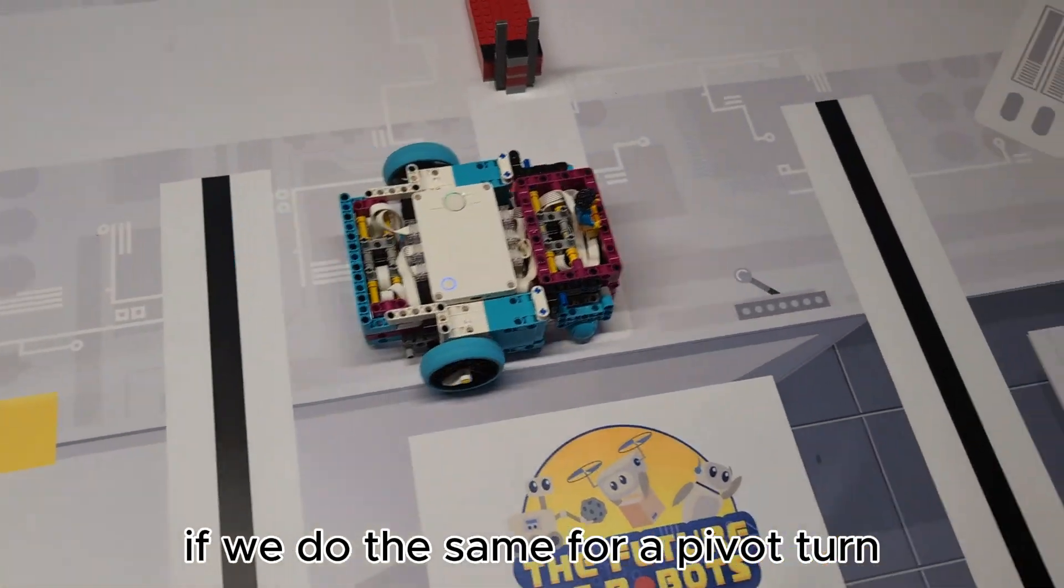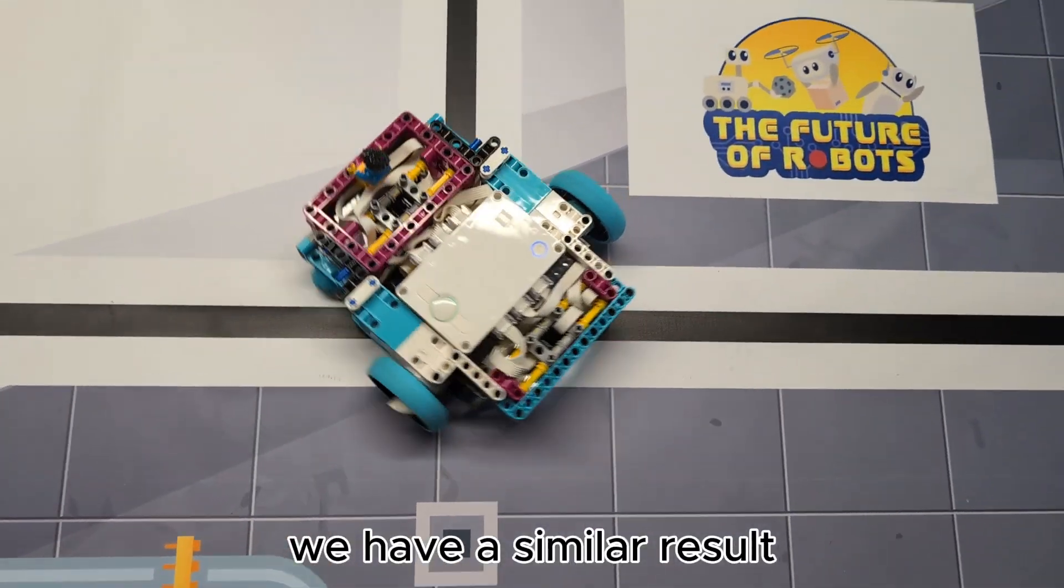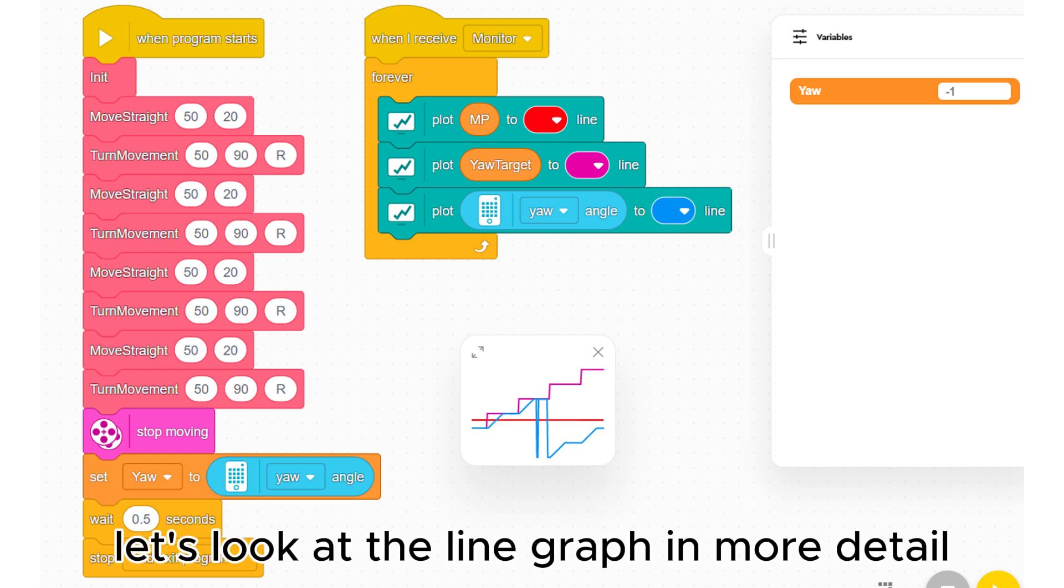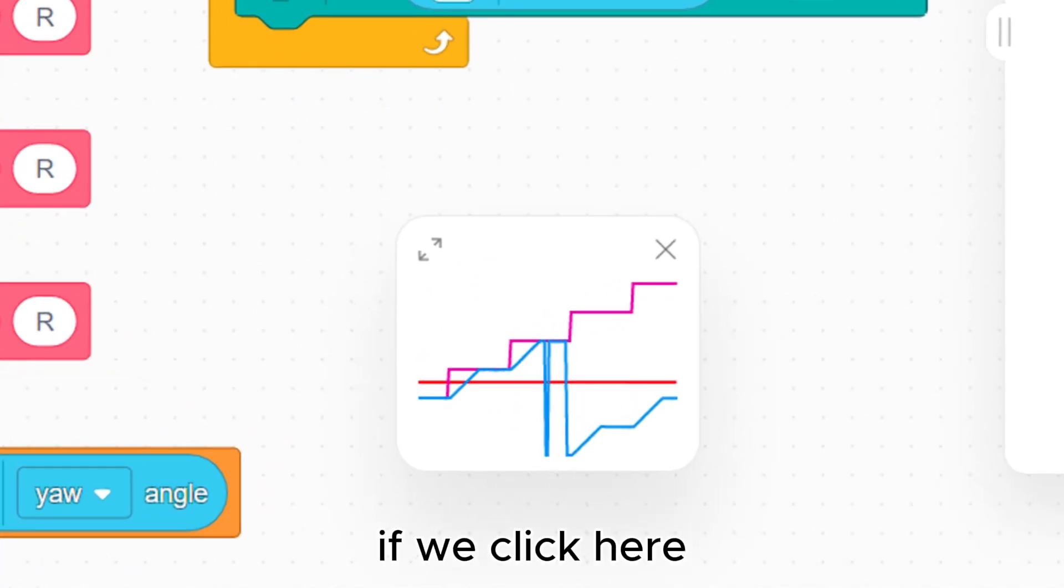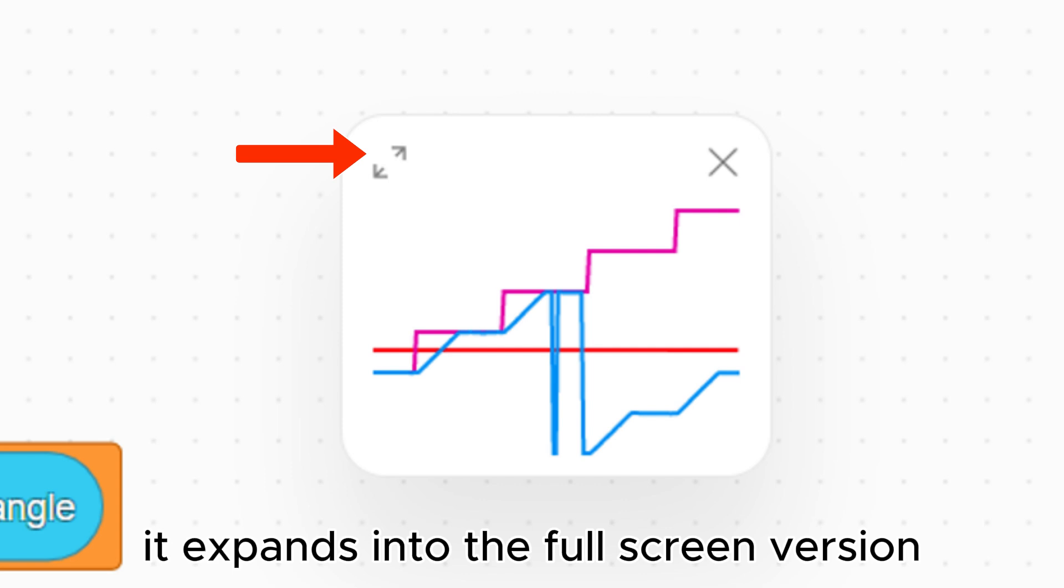If we do the same for a pivot turn, we have a similar result. Let's look at the line graph in more detail. If we click here, it expands into the full screen version.